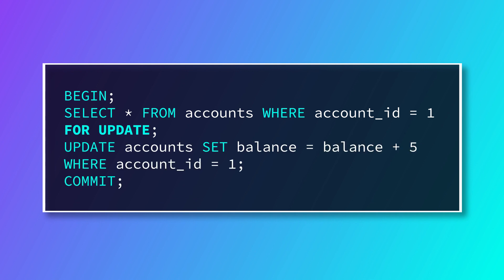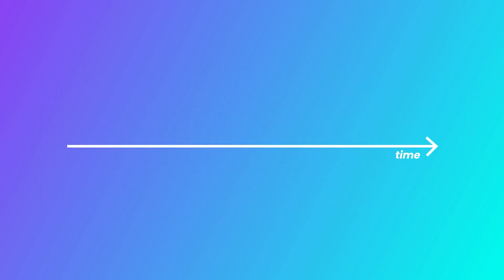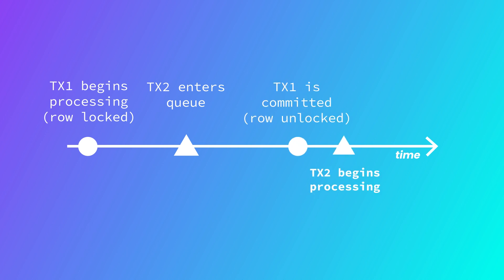So let's update our TX1 query to use SELECT FOR UPDATE. Now, when TX1 starts processing, it locks the row. So when TX2 comes in, it knows to wait and begin execution only after TX1 has been committed. Generally speaking, SELECT FOR UPDATE is recommended for these types of transactions.